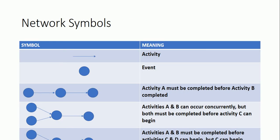Regarding network symbols: an arrow shows the activity, while nodes show the event. In the third row of the diagram, there are three nodes and two arrows sequentially, where node 1 is initiating and node 3 is completed, and the two arrows show that Activity A must be completed before Activity B. In the fourth row, there are four nodes and three arrows, where two arrows from two initial nodes converge on one node, and then one arrow leads to another node.